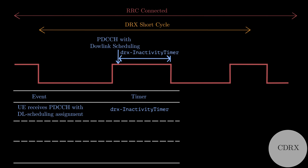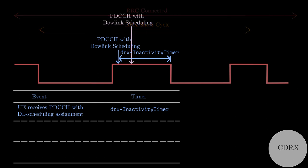During this period, if UE receives an additional PDCCH with another downlink scheduling, then UE restarts the timer and stays awake until the timer expires.